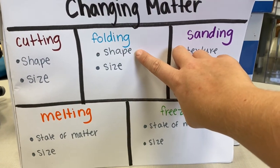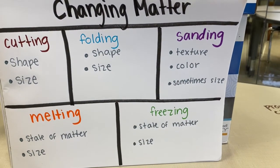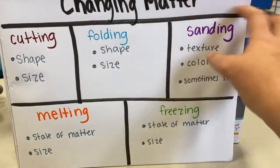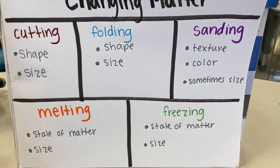Folding changes the matter's shape and size as well. Objects get smaller when you fold them, and their shape can change from a rectangle to a circle to a triangle or anything else you can imagine.